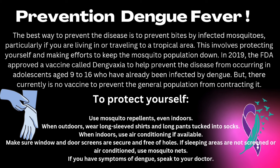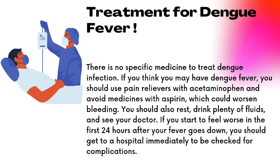If you have symptoms of Dengue, you need to speak to your doctor first. What is the best treatment for Dengue Fever? There is no specific medicine to treat the Dengue infection. But if you think you may have Dengue fever, you should use pain relievers with acetaminophen and avoid medicines with aspirin, which could worsen bleeding. You should also rest, drink plenty of fluids, and see your doctor. If you start to feel worse in the first 24 hours after your fever goes down, you should get to a hospital immediately to be checked for complications.